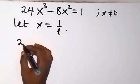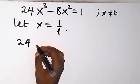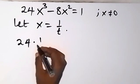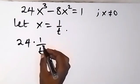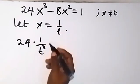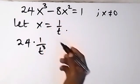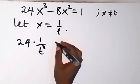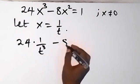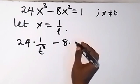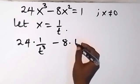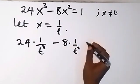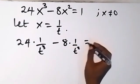Then we have 24 multiplied by 1 over t raised to power 3, as we have replaced x with 1 over t. Then minus 8 times 1 over t squared, and this equals 1.